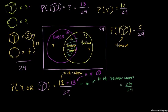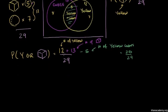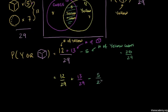The number of yellow objects plus the number of cubes minus the number of yellow cubes: 12 plus 13 minus 5. So P(yellow or cube) = 20/29. The number of yellow objects is 12/29 and the number of cubes is 13/29, minus the cubes which are yellow, which is 5/29.